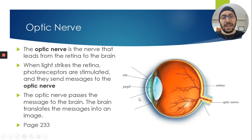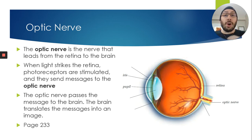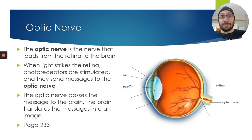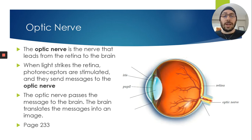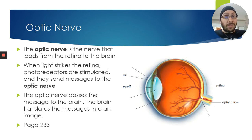There's an activity on page 233 in the textbook about finding your blind spot. The optic nerve attachment is the only spot on the retina where there are no photoreceptors, so we actually have a blind spot in each eye where we can't see. If both eyes are open, the blind spot from one eye gets picked up by the other, so we don't normally notice it.